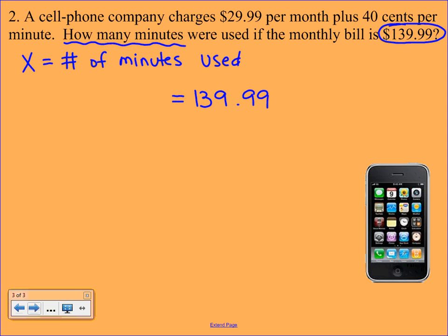Now we want to figure out what's going into that total. It says that it's $29.99 per month. That to me sounds like that's a flat fee. No matter how many minutes you use, you're going to have to pay this $29.99 each month. The $0.40 per minute is what's going to fluctuate depending on your minutes. So we're going to take that $0.40 and we're going to multiply it by x.